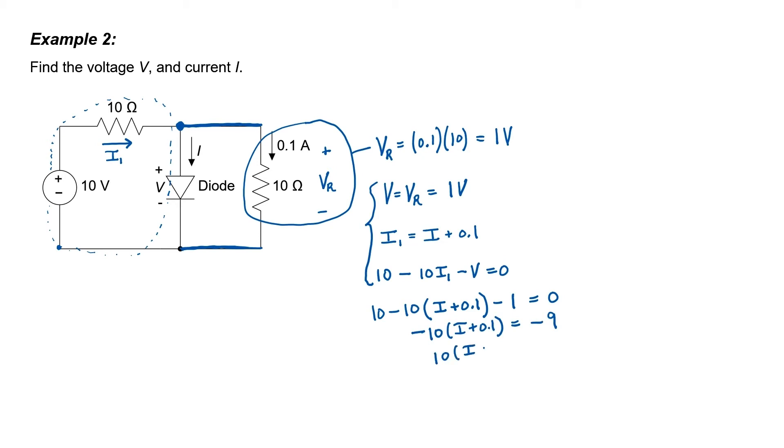After I move the 9 over to the other side of the equation, multiply both sides by negative 1, divide both sides by 10, and subtract 0.1, I wind up with an expression for current I of 0.8 amperes.